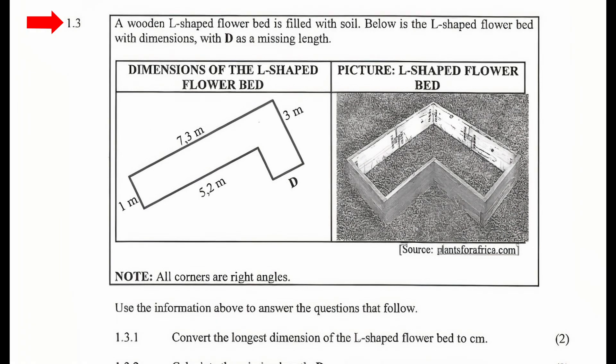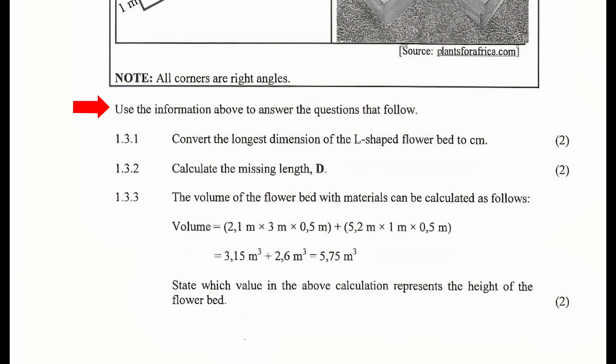Question 1.3: A wooden L-shaped flower bed is filled with soil. Below is the L-shaped flower bed with dimensions with D as a missing length. In this question, we are given a table with dimensions of the L-shaped flower bed in the first column. The dimensions are given in meters and one of the dimensions is unknown and labeled D. We will probably be asked to calculate this dimension later in the question. In the second column, we are given a picture of the L-shaped flower bed. There is a note that states that all corners are right angles. We are instructed to use the information above to answer the questions that follow.